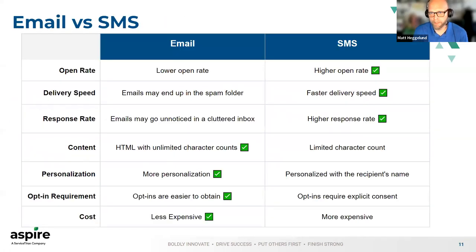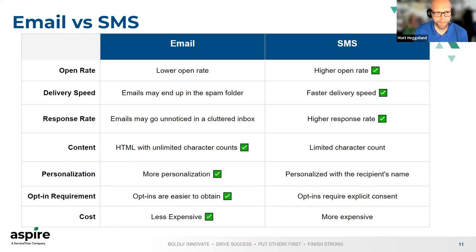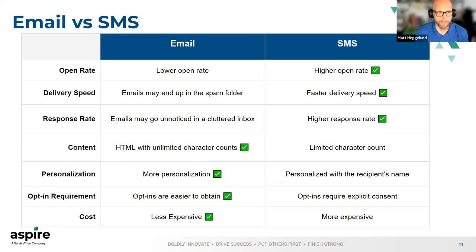Looking at when to use email versus SMS at a high level: if you look at open rates, SMS is going to have a higher open rate — people have their phone on them, it's instant, they're going to get that notification and open it up. Delivery speed: SMS is not likely to get caught in spam filters, whereas email is a different beast — you're dealing with a lot of different email servers, different logic, different security policies depending on where email is hosted. Sometimes emails can get lost in the mix.